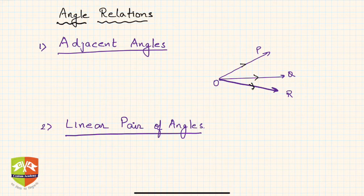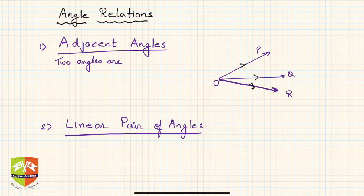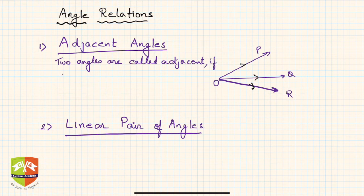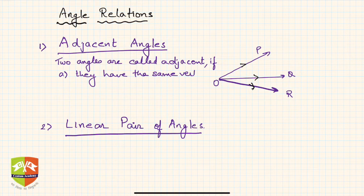What are adjacent angles? Two angles are called adjacent angles. 'Adjacent' means side by side. The first condition is that they must have the same vertex. Here, point O is the vertex.